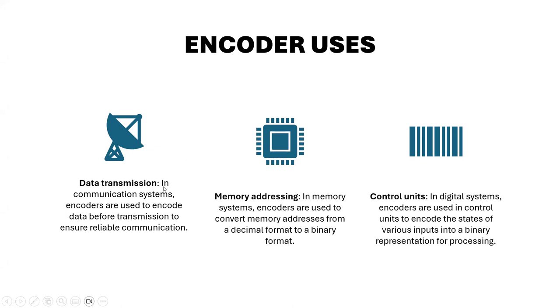Uses of encoders: in data transmission and communication systems, encoders encode data before transmission to enable reliable communication. For memory addressing, encoders convert memory addresses from decimal format to binary format - our computers understand binary. The control unit uses encoders to decode the states of various inputs into binary representation for processing, useful for calculations.